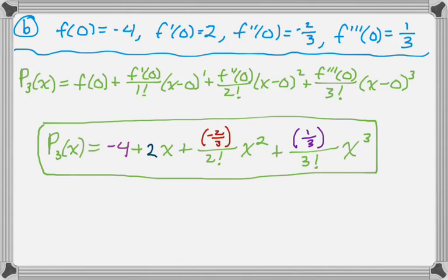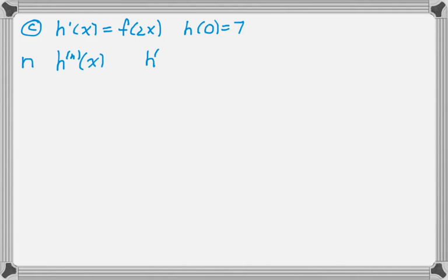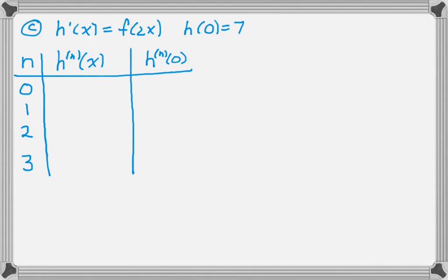We have one more part where we are to find a new function. So h'(x) is f(2x), and I know that h(0) = 7. What I'm going to do is make that table that I usually make, which has n, the nth derivative, and the nth derivative evaluated at the center. I have no idea what h(x) actually is, so I'm not going to be able to fill that in for 0, but I do know that h(0) = 7, so I fill that in.